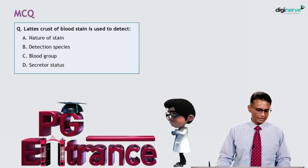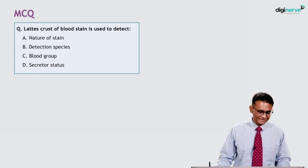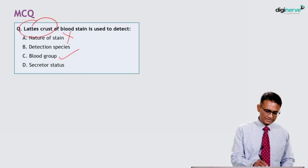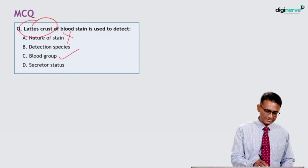MCQ — the lattice crust test of blood stain is used to detect: options are A) nature of stain, B) detection of species, C) blood group, D) secretor status. The lattice crust test is done to detect the blood group — not the nature of stain, detection of species, or secretor status. The correct option is C.